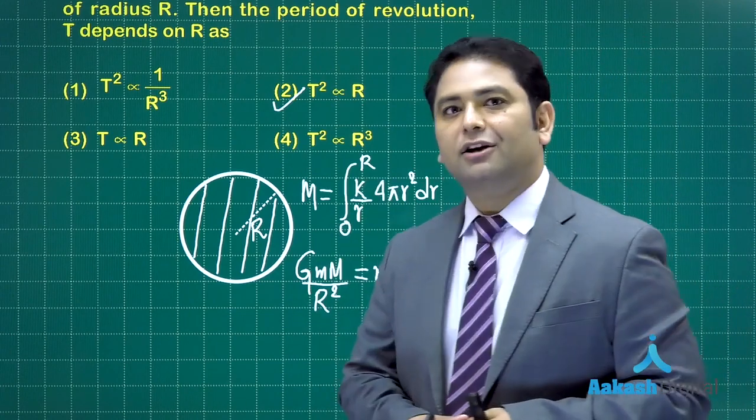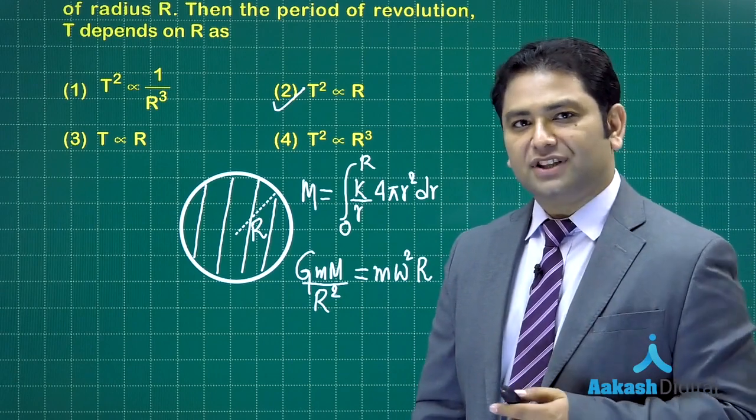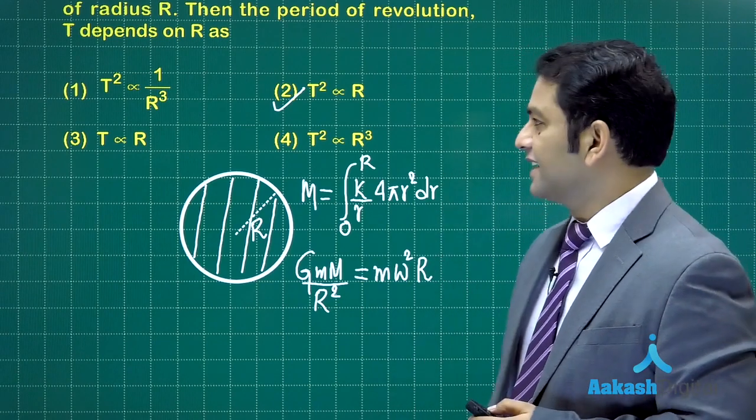So rest is quite simple. You can see the time period, the dependence is going to be T square directly proportional to capital R, so the correct option would be option number two.